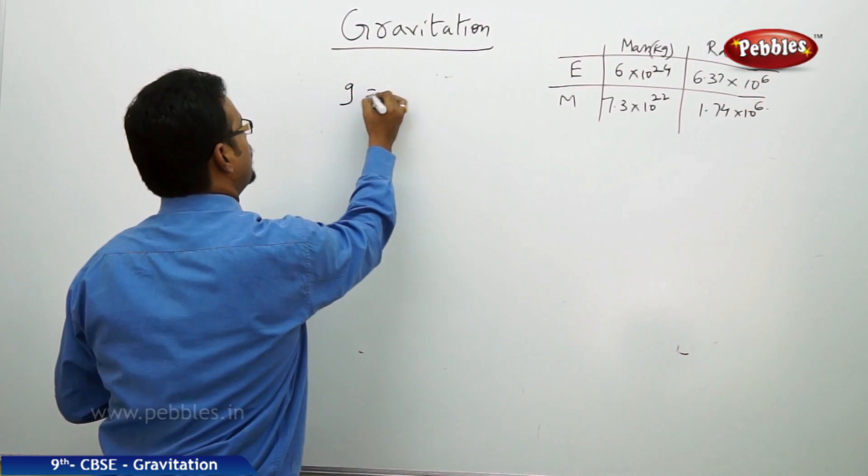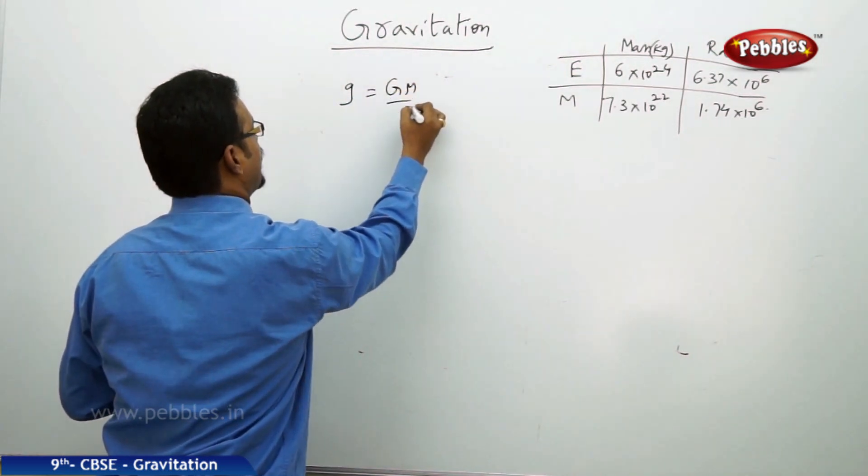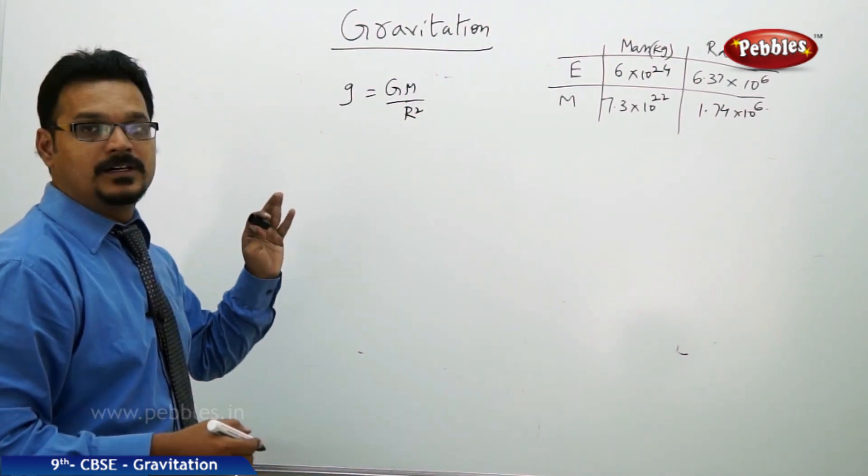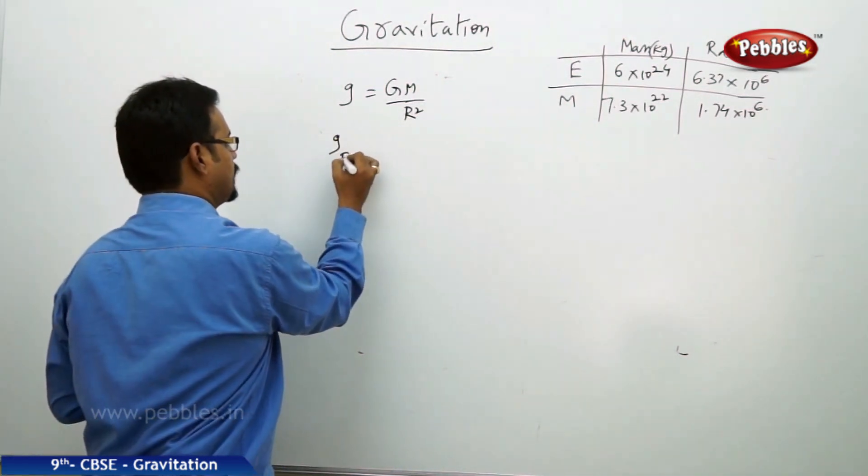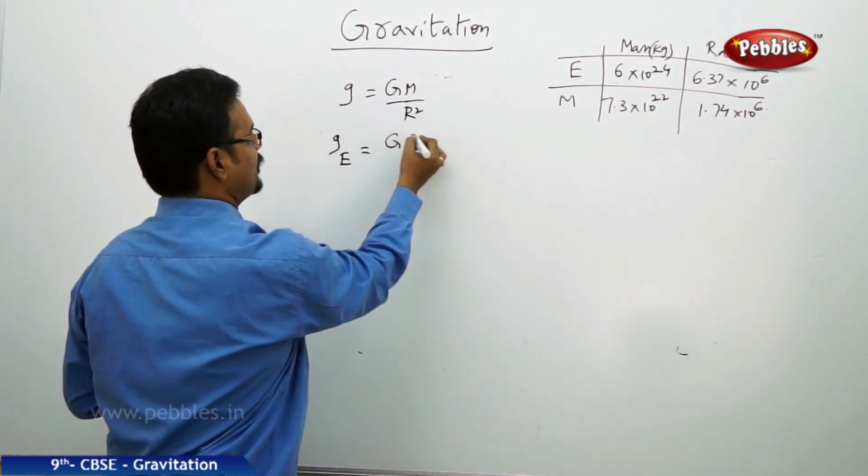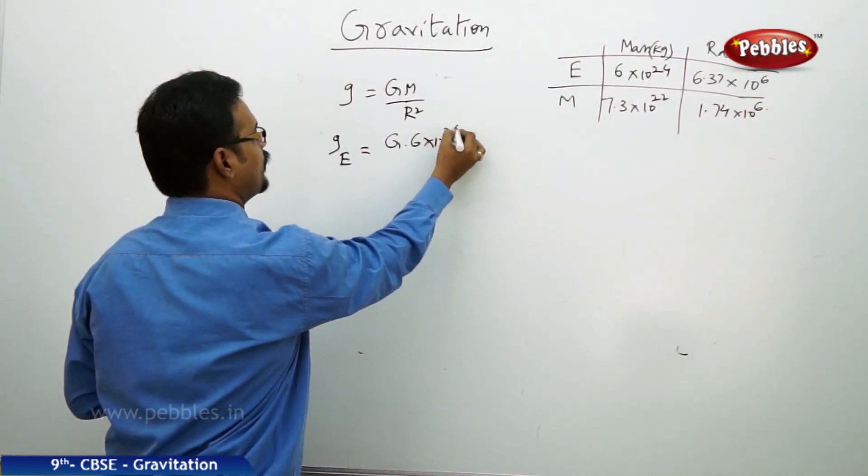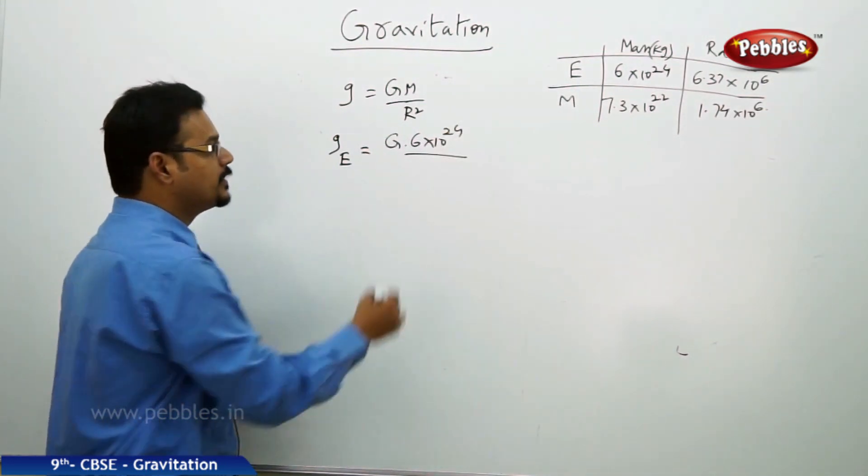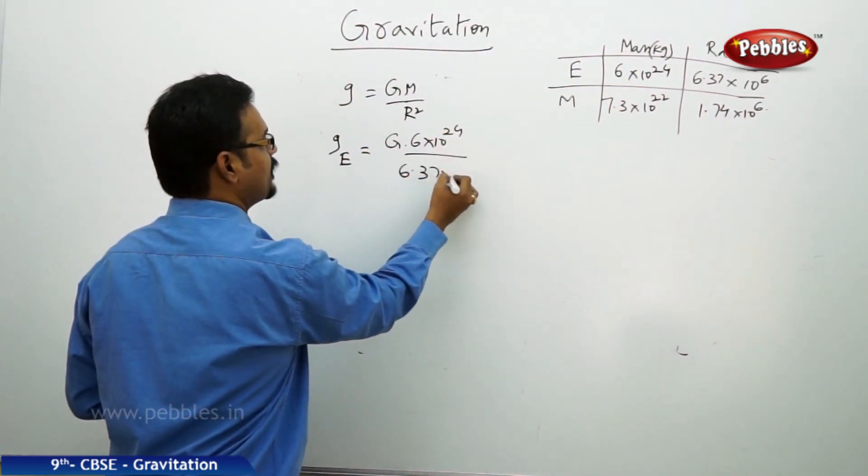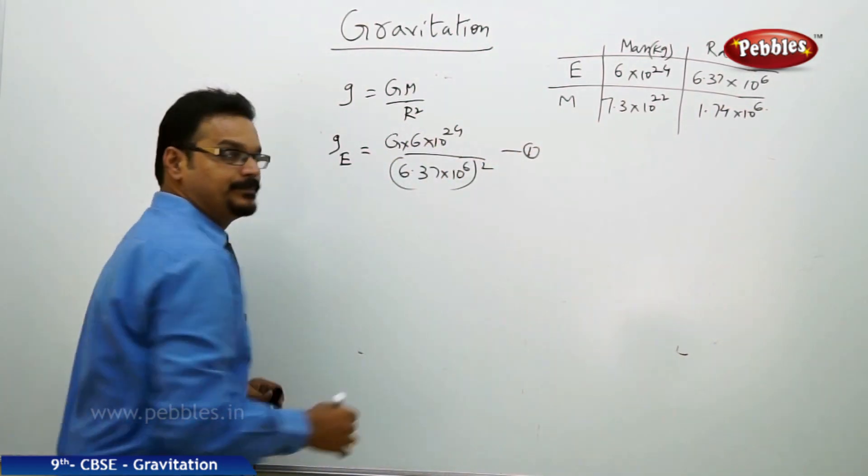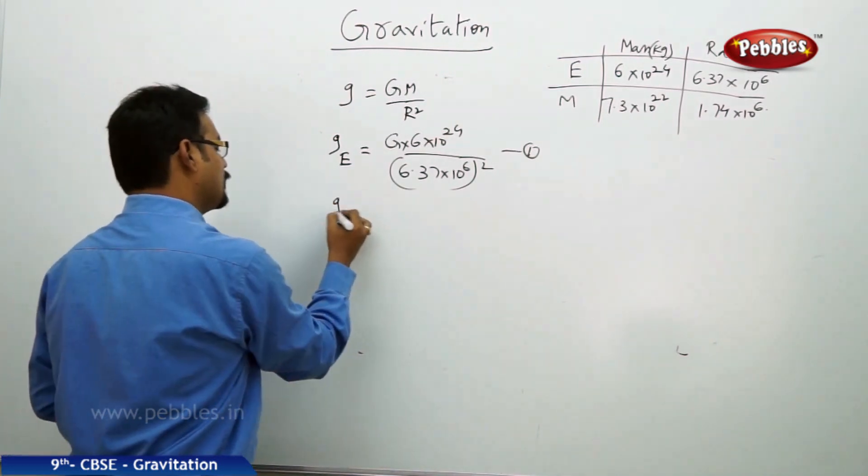Now let us take the formula g equals to GM by r squared. First of all, we find the g for Earth. So g Earth equals to G value constant. We know the mass of the Earth is 6 into 10 power 24, by r squared. The radius of the Earth is 6.37 into 10 power 6 whole squared. That's equation one.